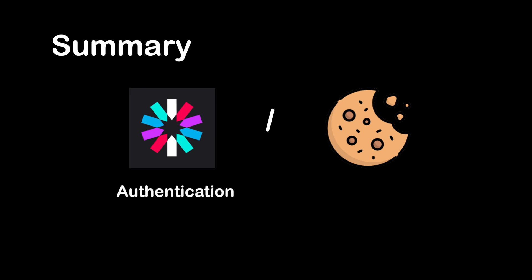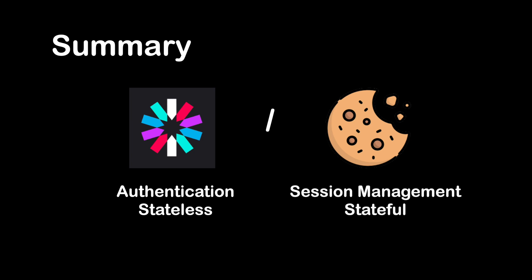In summary, JWT and cookies serve different purposes and have their own strengths and weaknesses. JWTs are typically used for authentication and are stateless, while cookies are primarily used for session management and maintaining state. The choice between JWT and cookies depends on the specific requirements and security considerations of your application — in some cases, a combination of both may be used to achieve the desired functionality.